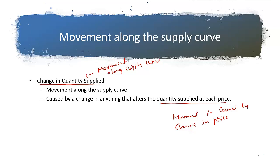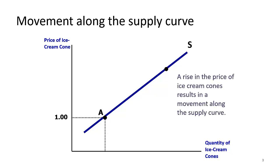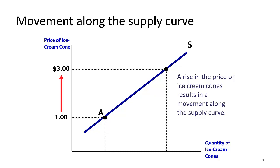Let's try to understand this using a graph. This is a supply curve — we all know the supply curve is always upward sloping; it increases with price. So the x-axis is the price of ice cream and the y-axis is quantity supplied. Let's say a rise in the price of ice cream happens, so price increases to three dollars. As a result, the quantity moves up, and the seller produces at a higher quantity — so quantity increases.